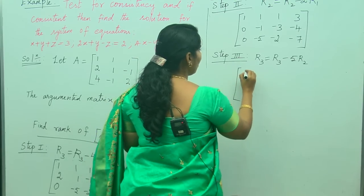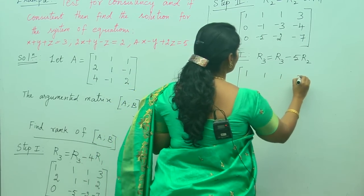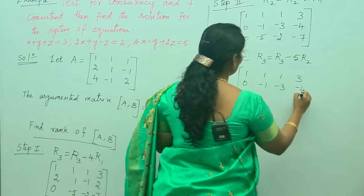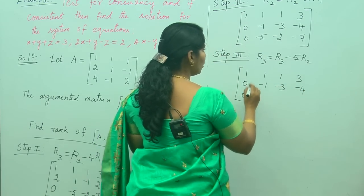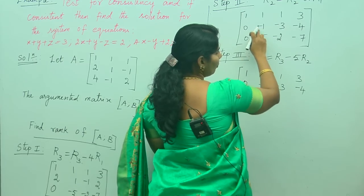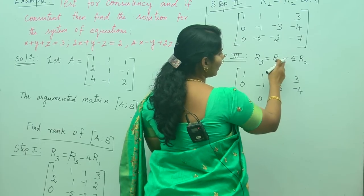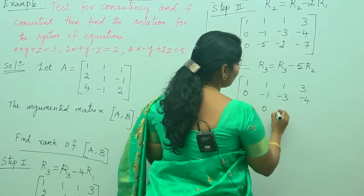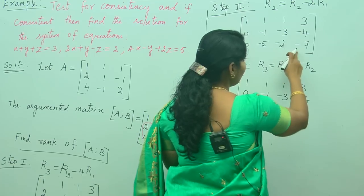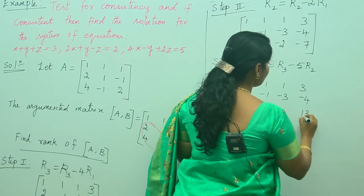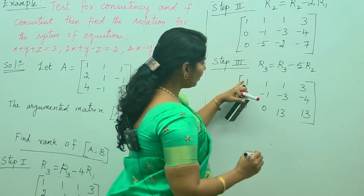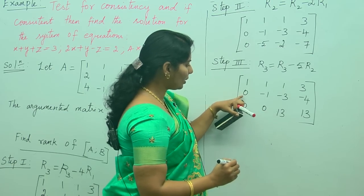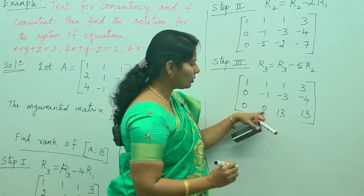After applying R3 = R3 minus 5R2, row 1 remains 1, 1, 1, 3. Row 2 becomes 0, minus 1, minus 3, minus 4. For row 3: 5 minus 5 gives 0, then simplifying further gives 13, and the right-hand side also gives 13. We now have the upper triangular matrix with all below-diagonal elements as zero.